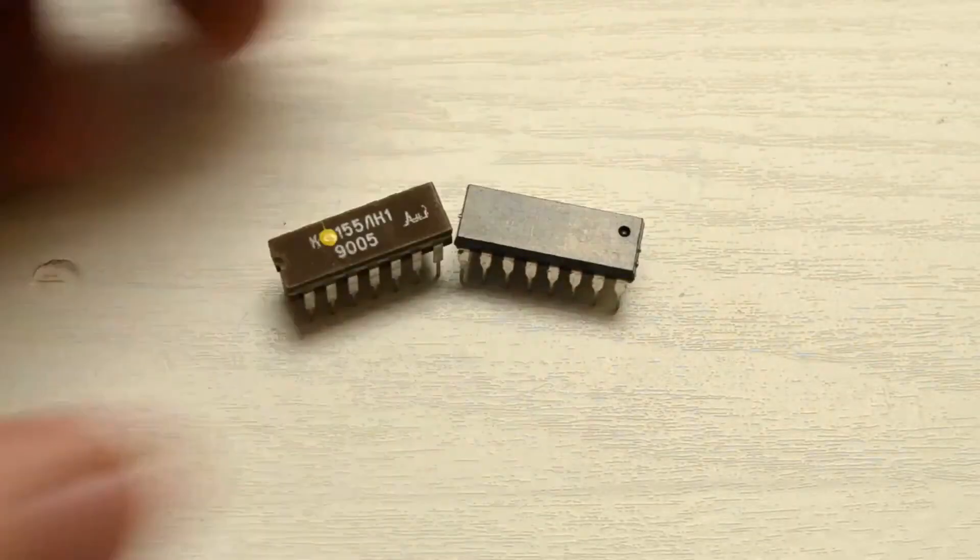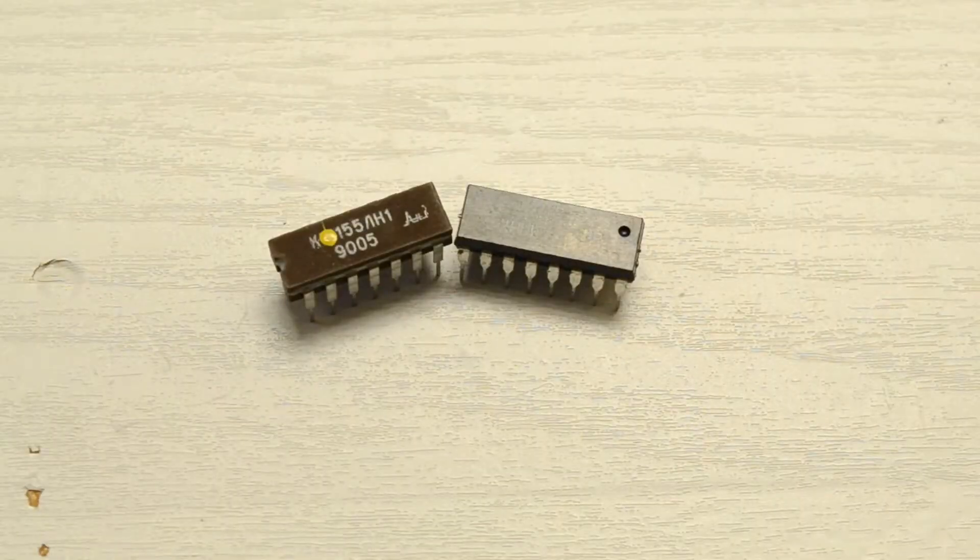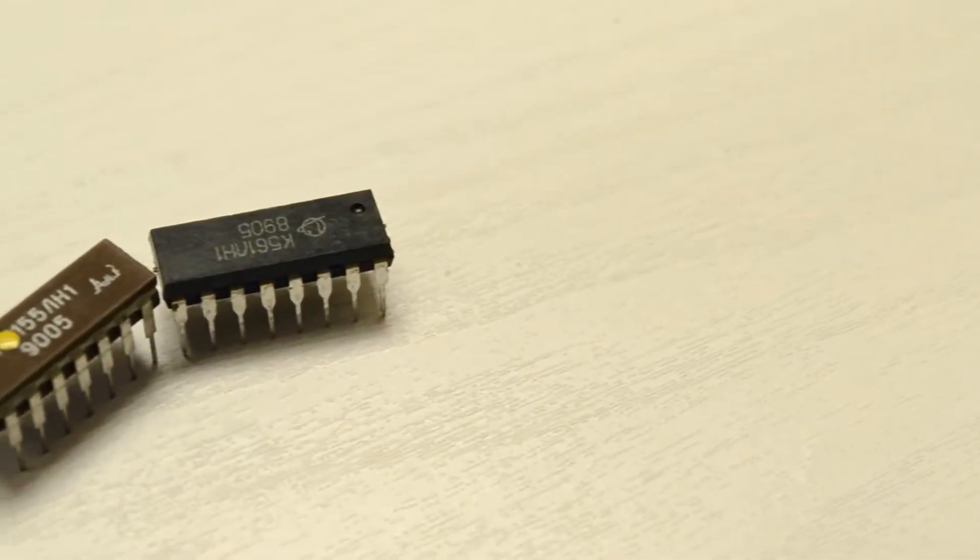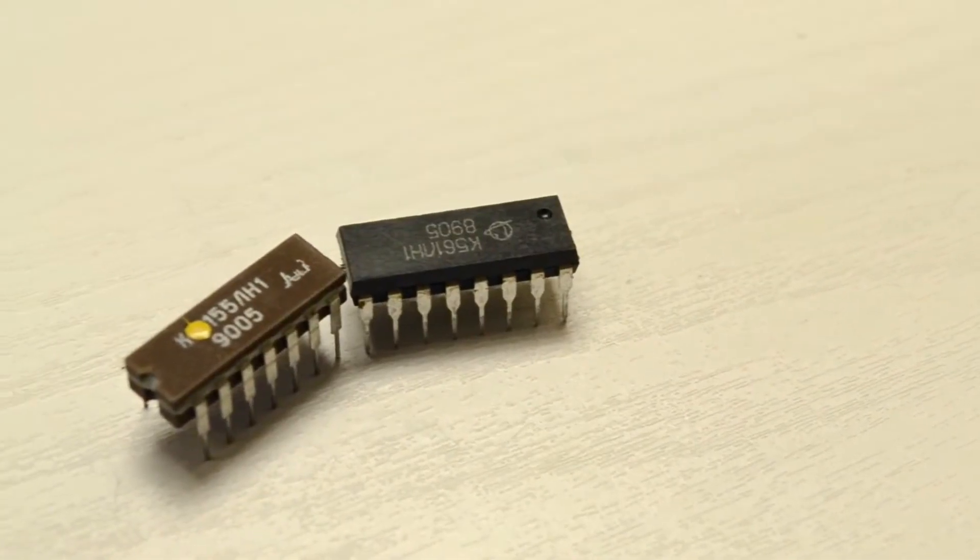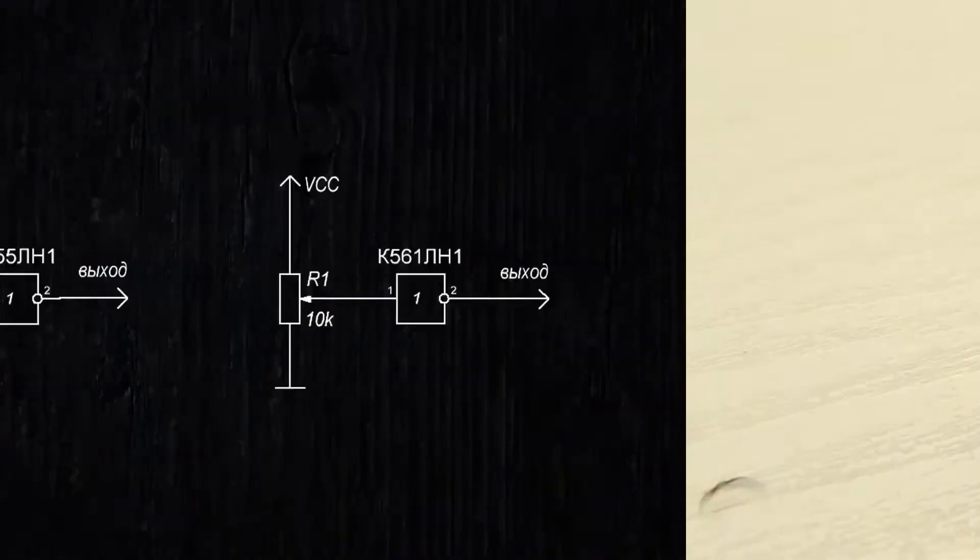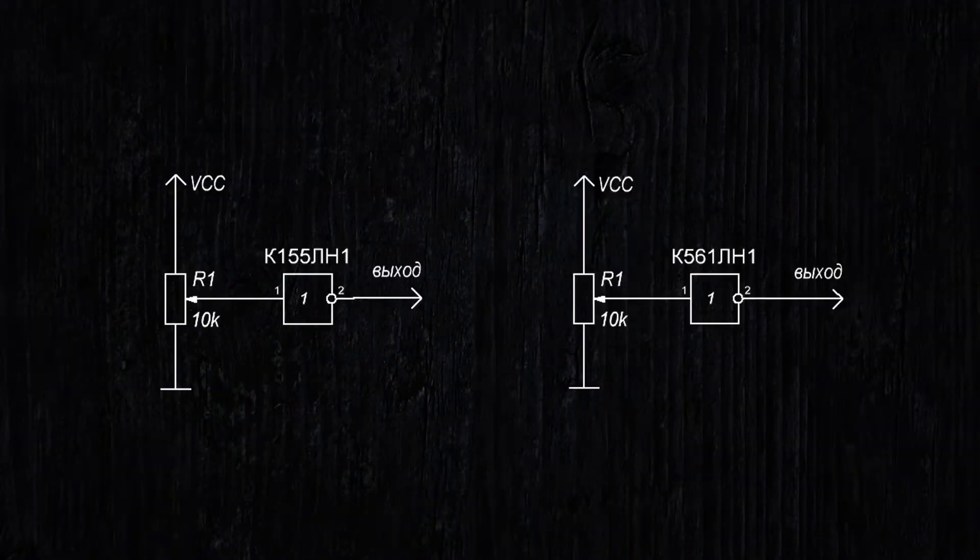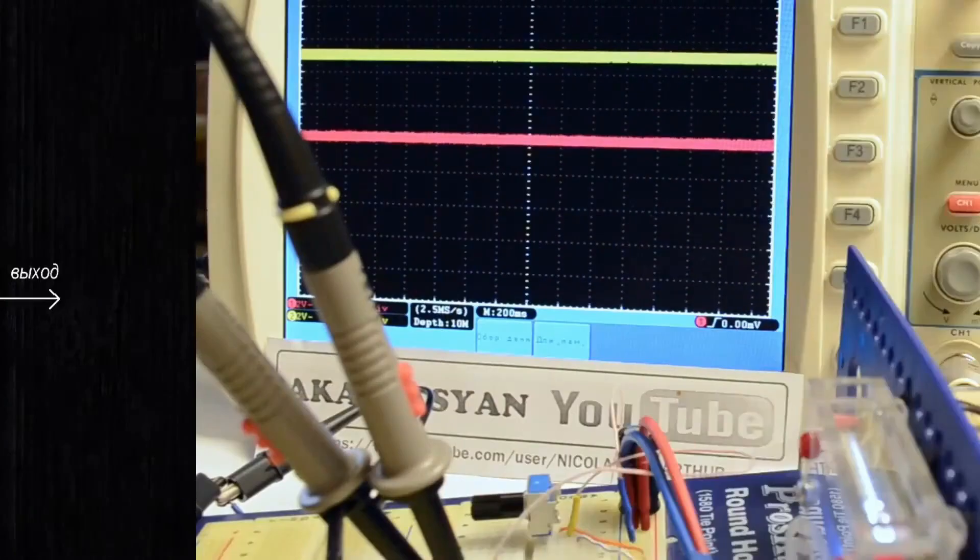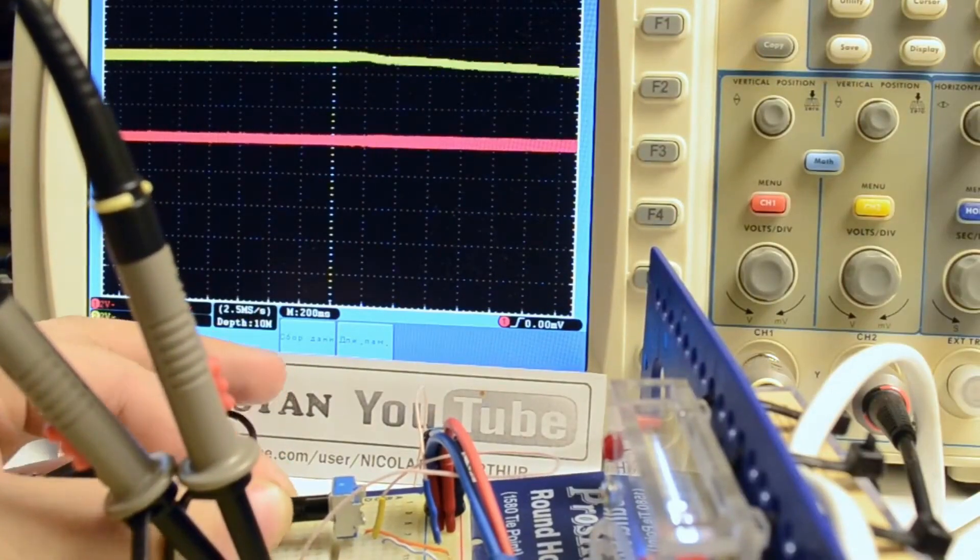Let's take two microchips, the K155LN1, which has six NOT gates in TTL implementation, and the K561LN1, which also has six NOT gates but made using CMOS technology. Connect a 10kΩ variable resistor to the input of the microchip and start gradually changing the voltage at the input of the microchip. We'll use an oscilloscope to observe what happens at the input and output.